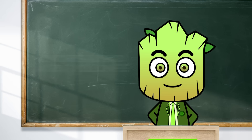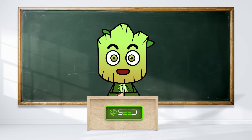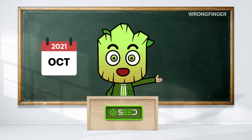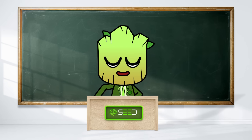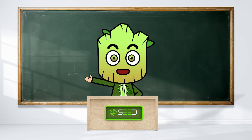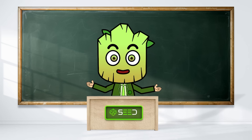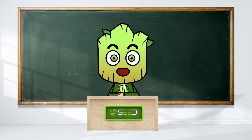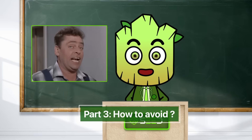That exorbitant fee was a serious problem, but the platform got lucky — the miner who received the fee refunded the total amount. Additionally, in October 2021, a small coding error in the Compound Finance DeFi protocol accidentally sent $90 million worth of Compound tokens to users. Despite pleas from the protocol's founder, some users decided to keep the unexpected windfall rather than return it.